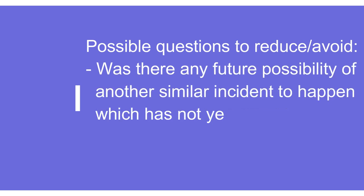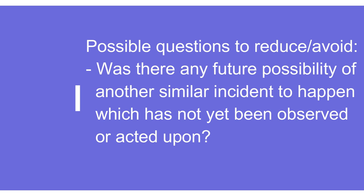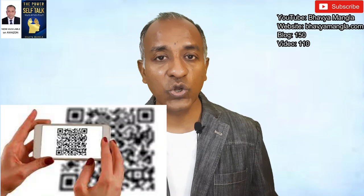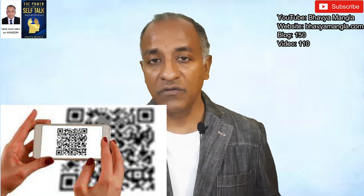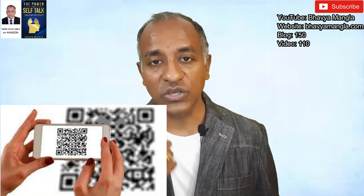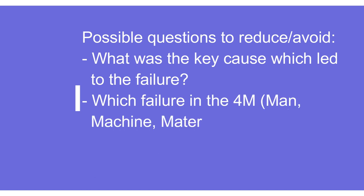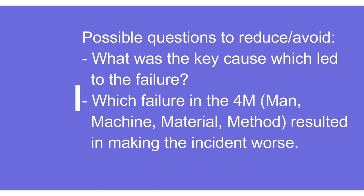The next question: is there any future possibility of a similar incident not yet observed or acted upon? For example, tomorrow the QR code on the packing material might get rubbed and damaged on a bad road, so the scanner at the customer end cannot scan it — that's another potential future causal factor. The final question: which failure in man, machine, material, or method could have made the incident worse? By asking all these questions, we understand current causal factors and prevent future ones.